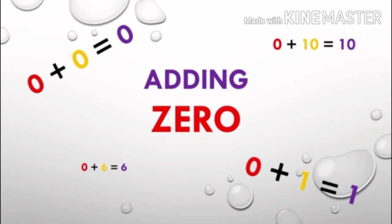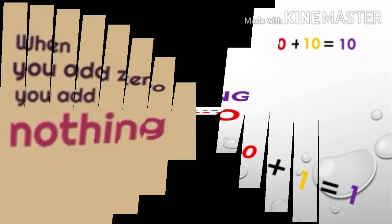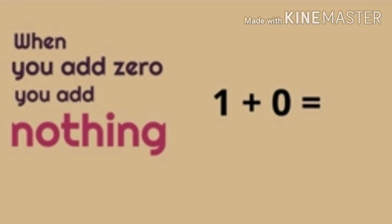Adding zero. That is why zero plus zero is equal to zero. Because zero does not have any number value. That is why zero plus ten is equal to ten. When you add zero, you add nothing.